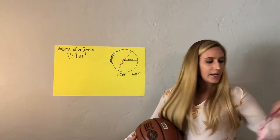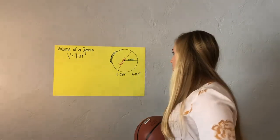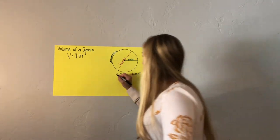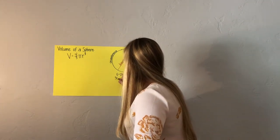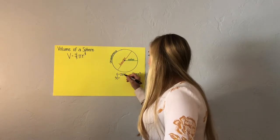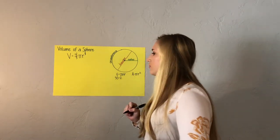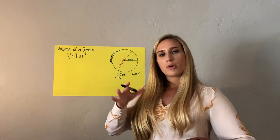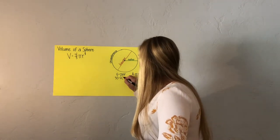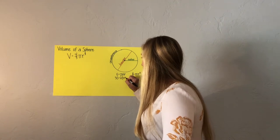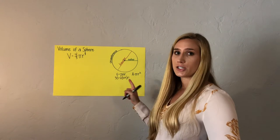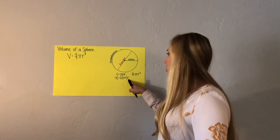Now that I know the circumference is 30, I can plug it into the formula for the circumference of a circle. If C equals 30, I have 30 equals 2 pi R. Pi is equivalent to the approximation 3.14, so I have 30 equals 2 times 3.14 times R. The only thing I need to solve for now is the missing variable R, which represents the radius.